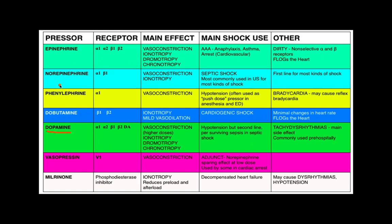Dopamine is basically worse norepinephrine — it has both alpha and beta effects plus dopamine receptor effects, with vasoconstriction and cardiac effects, but is second line to norepinephrine primarily due to risks of tachyarrhythmias. Finally, milrinone is a phosphodiesterase inhibitor with effects mainly on the right heart, used only in decompensated heart failure. It can cause hypotension related to vasodilation, and if you're using it you should know more about heart failure management than a general overview covers.